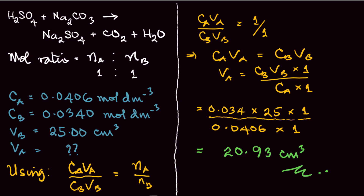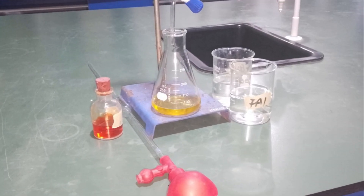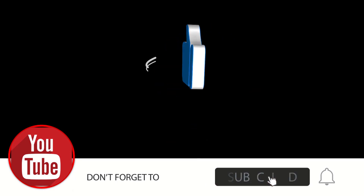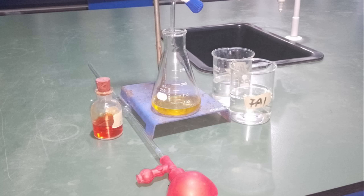Whatever results you obtain must revolve around 20.93 cm³. Remember, if you follow the procedures correctly, any value you get is acceptable because not everyone uses the same reagent. Stick to the reagent values you use — don't manipulate your results to match someone else's. Ensure your students' results are within the same range as the titer value obtained. That's the end of this tutorial — give us a like, subscribe, turn on your notification bell, and leave a comment. Until next time, be humble and continue learning. God bless.